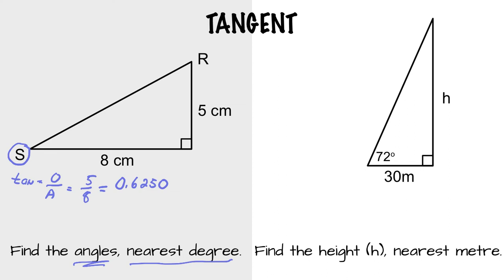We don't know the angle, but we know that the ratio is 0.6250. So the correct way to write it is tan reverse 0.6250. And that's going to equal angle S.